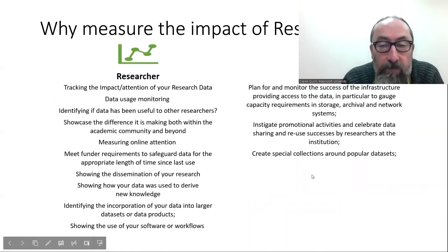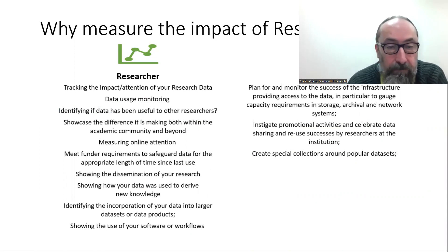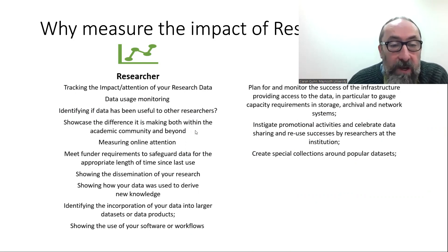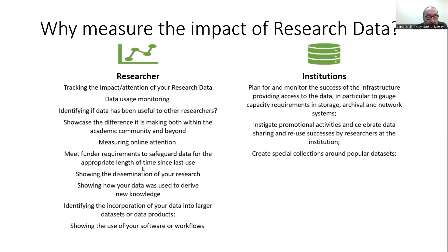So why measure the impact of research data? There are lots of reasons. From a researcher level, it's a bit like tracking the impact of your journal articles, but this tracks the impact and attention that your research data receives. You're also able to monitor who's using your data and see if it's been useful to other researchers, showcasing the difference it's making both within the academic community and beyond, measuring online attention and meeting funder requirements to safeguard data for the appropriate length of time. As you probably know, with funders now it's a requirement to make your data available open access, so you need to provide certain reassurances to them. You can also use it for dissemination of your research, showing how your data was used to create new knowledge, identifying incorporation of your data into larger datasets or data products, and showing the use of your software workflow. It's showing that broader, perhaps societal, impact of your work as well.